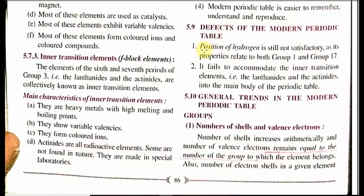Defects of the modern periodic table: first, the position of hydrogen is still not satisfactory, as its properties are related to both group 1 and group 17. In group 1, metals can lose electrons and hydrogen can also lose electrons; in group 17, halogens can gain electrons and hydrogen can also gain electrons. Second, it fails to accommodate the inner transition elements — lanthanides and actinides — into the main body of the periodic table. You will study more about this in Class 11.